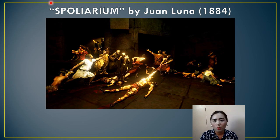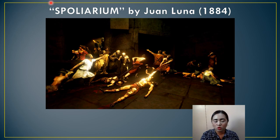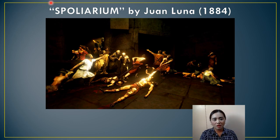Juan Luna did not only paint so that he could win the competition. He chose this theme as a form of silent protest to help the Filipinos and the people of Spain see the real situation of the Philippines at that time. Just like Jose Rizal, who chose his pen and paper as mediums of activism, Juan Luna chose his easel, brush, and paint as his forms of social activism.